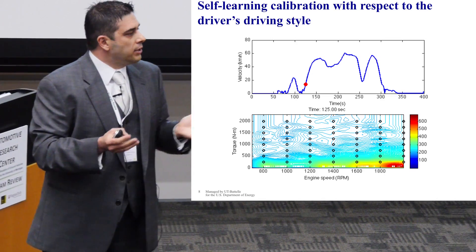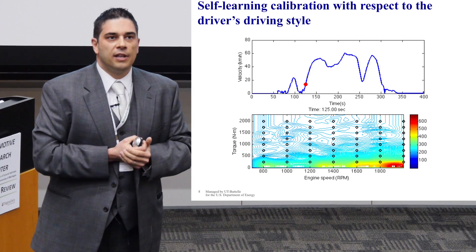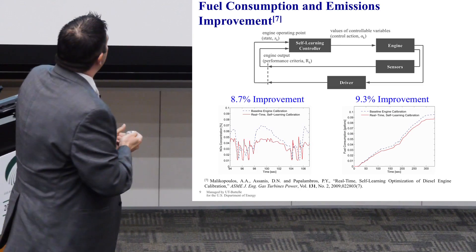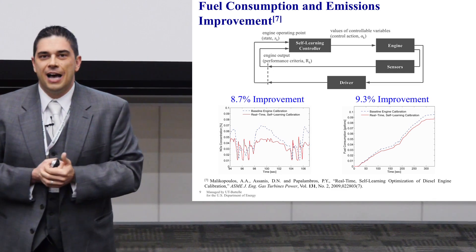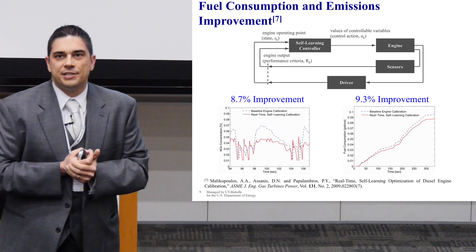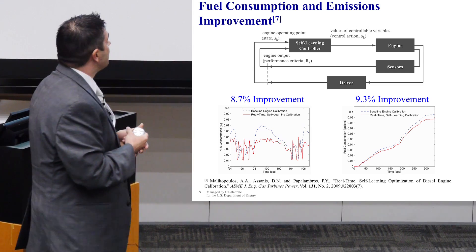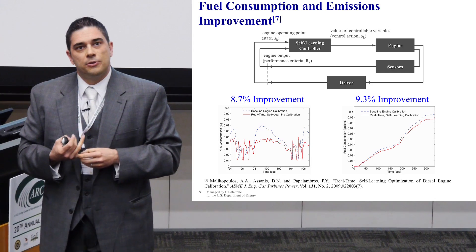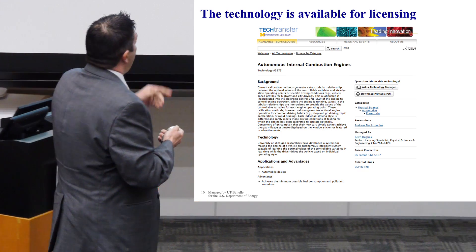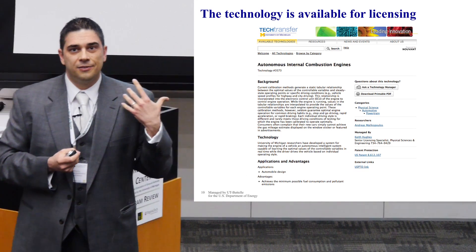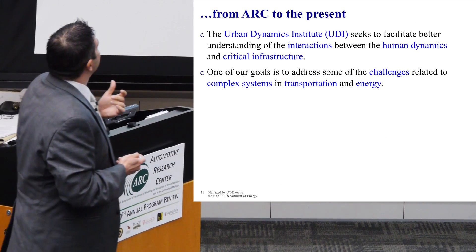How do we do that? We model mathematically the evolution of engine operation as a control Markov-Chain, and essentially we solve a stochastic control problem. We did various case studies and presented those in different conferences here at the ARC. We noticed that there is significant room to improve both fuel economy and emissions by doing this exercise. This is a particular example with a diesel engine when we try to optimize with respect to injection timing and the variable geometry turbocharger. A few months ago, I learned that the University of Michigan awarded a patent on that, and the Technology Transfer Office would be happy to discuss opportunities for licensing.